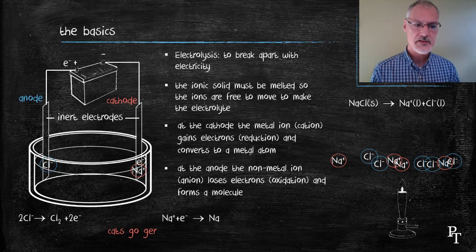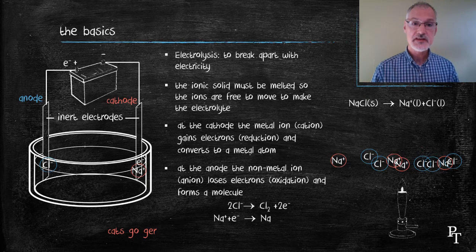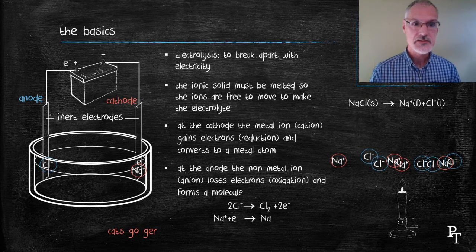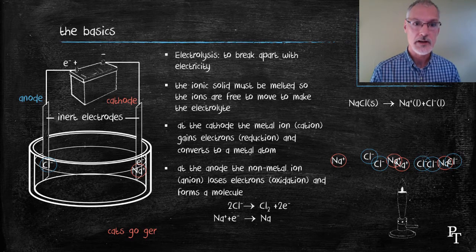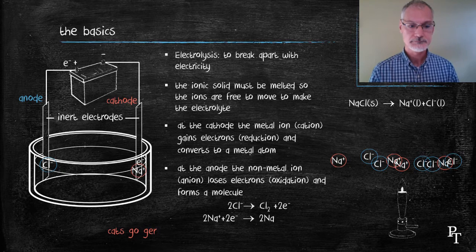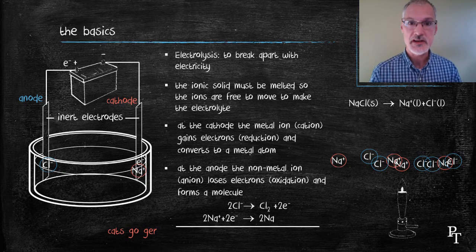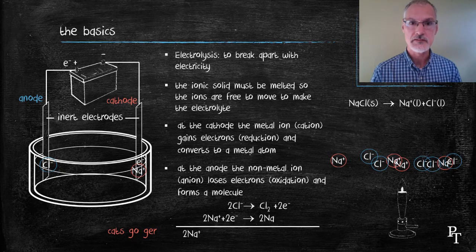Now, these reactions can be put together to come up with the overall cell reaction. You'll notice in this case, though, that the sodium needs two electrons, not one, in order to balance. So I have to multiply that equation by two. Now I'm in a position where I can add the equations together to get the overall equation for the electrolysis.